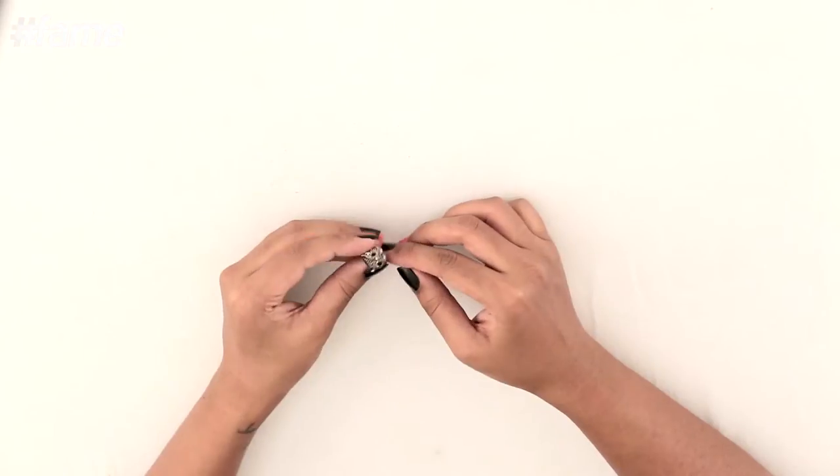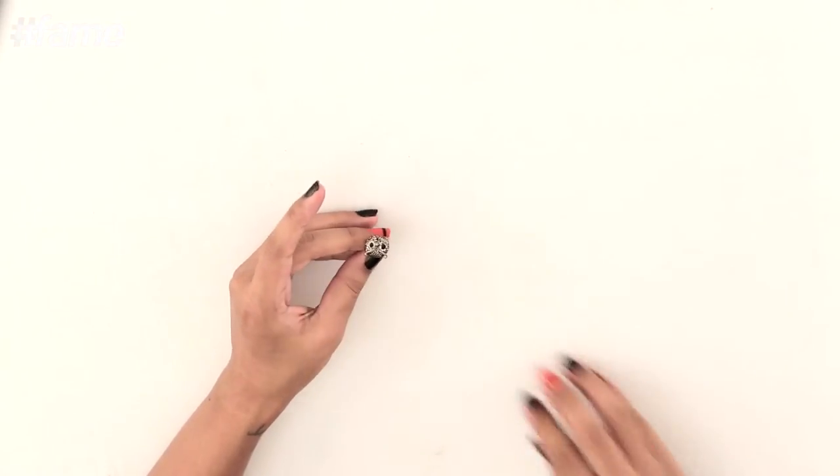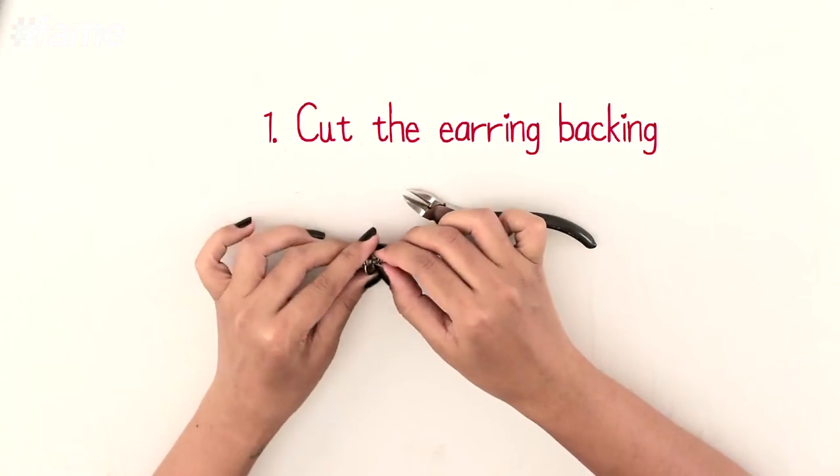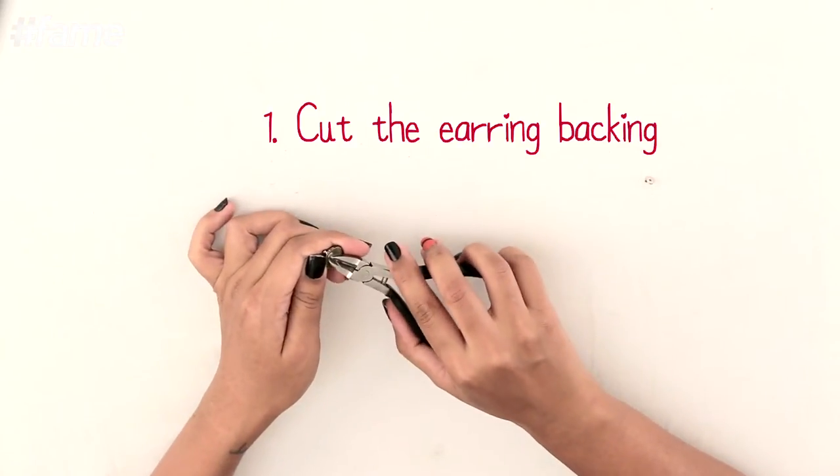So this is the earring, an owl earring that I'm going to be using to make a lapel pin. You can choose any interesting earring. The first thing you need to do is remove this earring backing. You might be able to do it by hand or cut it by a wire cutter.